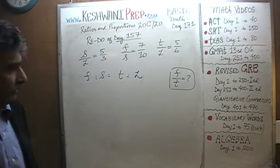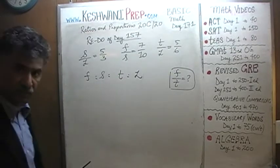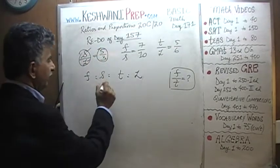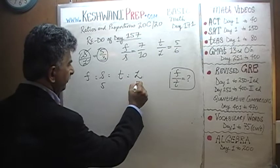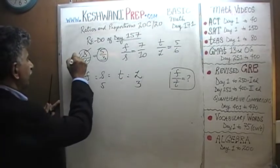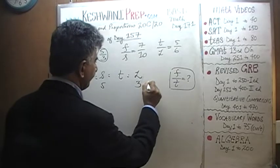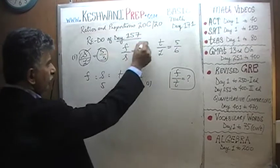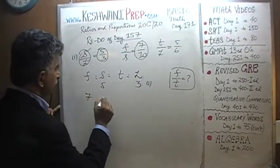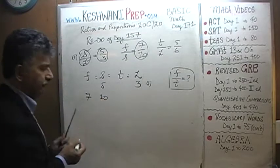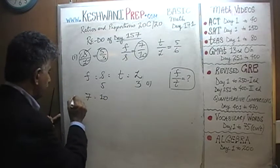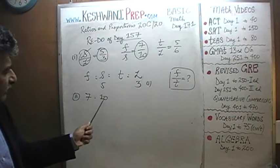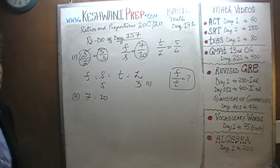We're just going to pick our ratios and insert them right here and watch what happens. S to L is 5 to 3 — that's the first ratio. Then we have F to S is 7 to 10. Right there you have to pause, because the numbers cannot differ. Here we have 5 and here we have 10 — that won't do.